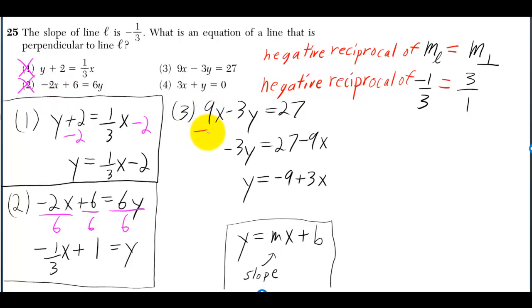For 3, you can subtract 9x from both sides, and then divide everything by negative 3. And 3 is in front of x, which is what we want.